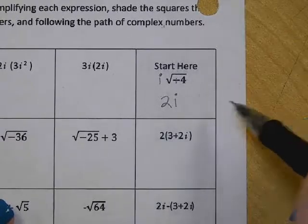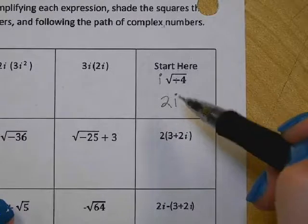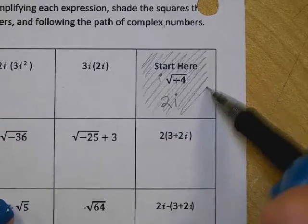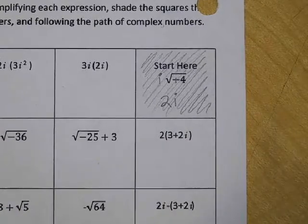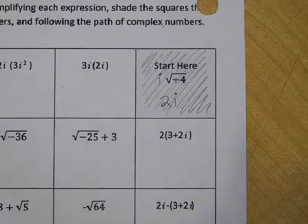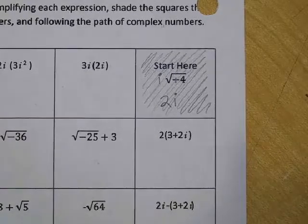All right, so what you do, if the box has an i in it, you shade the box. So go ahead and shade this box. To do the maze, you can only go left and right and up and down, and your goal is to find the boxes that have the i's. That's how you follow the maze.